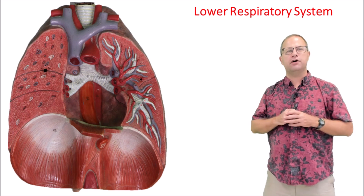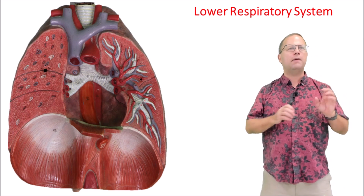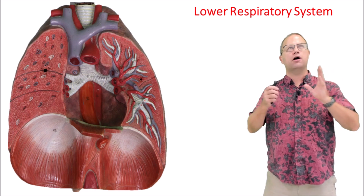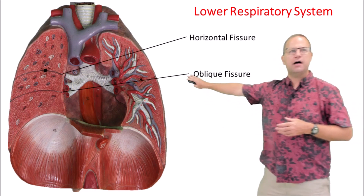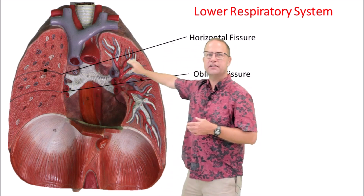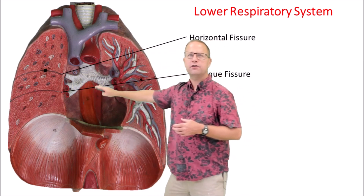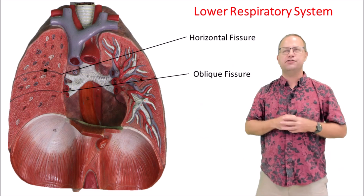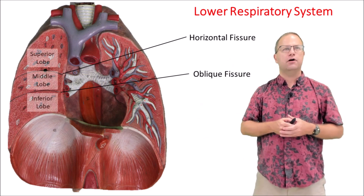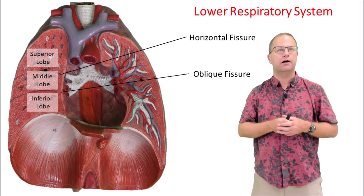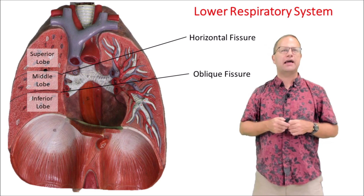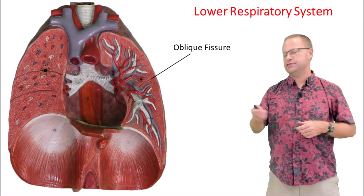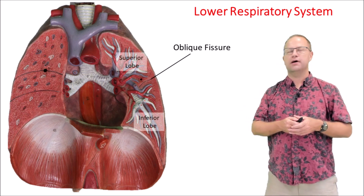Now let's talk about the lobes of the lungs. The right lung has three conspicuous lobes and the left lung has only two conspicuous lobes. These lobes are divided by structures called fissures. In the right lung we have a horizontal fissure and an oblique fissure, which together divide it into the superior, middle, and inferior lobes. The left lung has only an oblique fissure, so it has only two visible lobes: the superior and inferior lobes of the left lung.